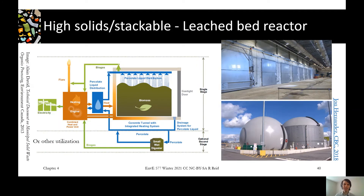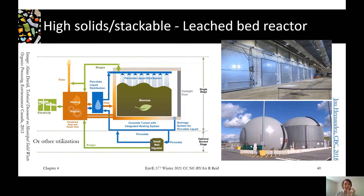The last system is the stackable system, which is the most different from the other two. Instead of pumping material, it's loaded into a tunnel and liquid is rained down on it, with leachate circulated back over it. Because the microbes need the products of other microbes to continue the reaction, those products must be carried throughout the pile — that's what the leachate circulation does. At the bottom there's also a small wet digester where leachate can be digested to produce more biogas.